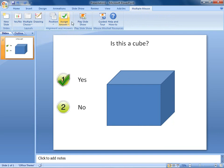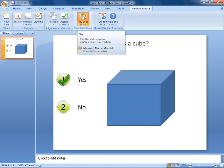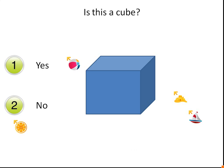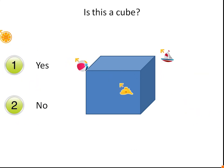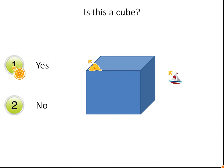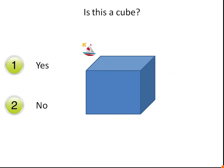Let's have a look at how this slide will appear to the students. Each student uses his or her mouse to click on an answer. After all students have selected an answer, the correct answer and a results pane display on the slide.